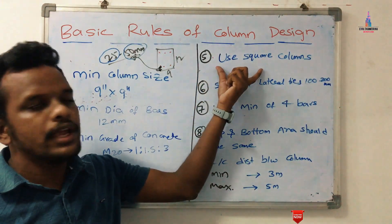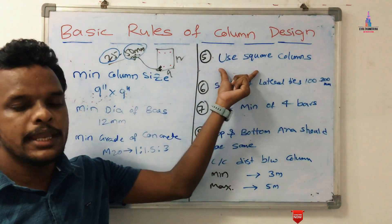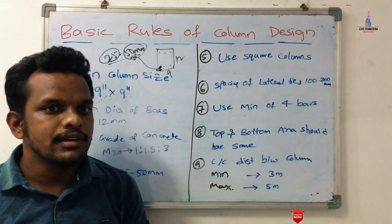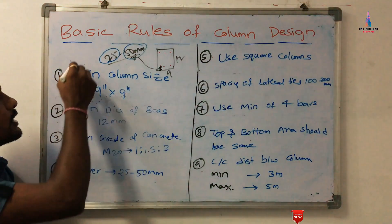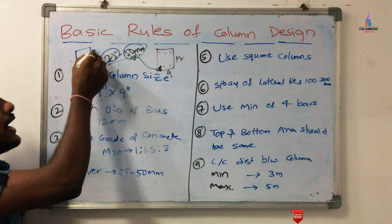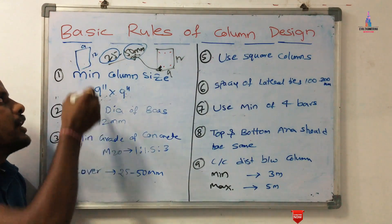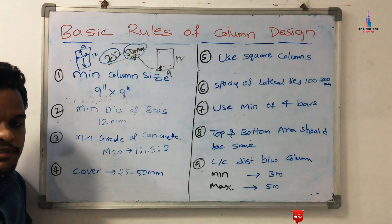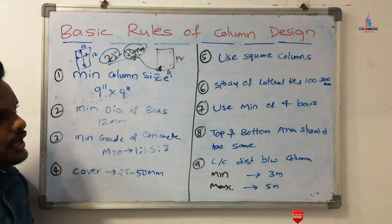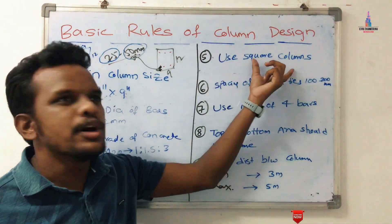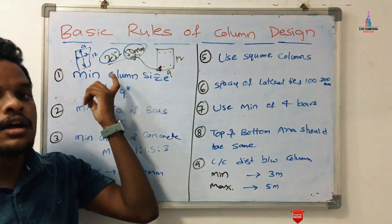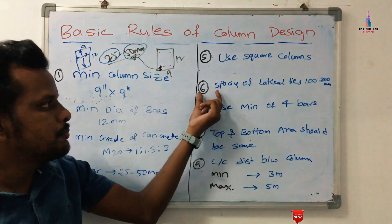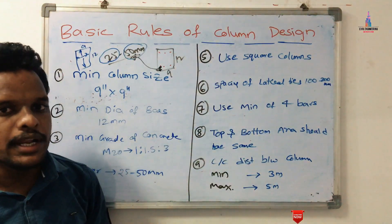The fifth rule: use square columns only. The use of square columns distributes the loading condition equally through the X and Y directions. For example, a column of 12 inches cross 9 inches will carry a higher load intensity towards the higher dimension compared to the lower dimension. To resolve this problem, we should consider square columns. If not possible, use a rectangular section but choose the most economical section.